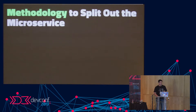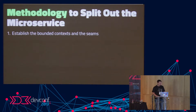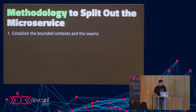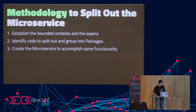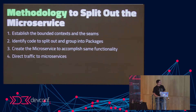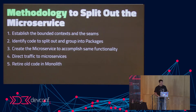So the methodology to split out a microservice: first, establish the bounded contexts and seams — that gives you an idea of what you're modeling. Then identify the code to split out and group it into packages. Then create the microservice to accomplish the same functionality. Then direct your traffic to the microservice. If everything goes okay, retire the old code in the monolith. In that case, you've actually made the monolith smaller, which is what you're aiming for.